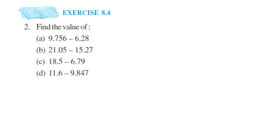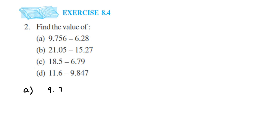Here's a question from exercise 8.4, second question, chapter on decimals. We have four questions where we have to subtract decimals. So let's start with the first question. When you're subtracting or adding decimals, you have to use a lineup method — you're going to line up the decimals first. The first number is 9.756.